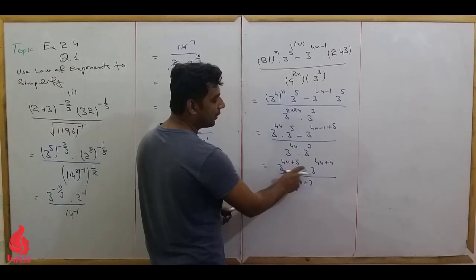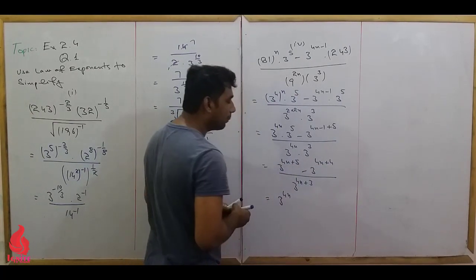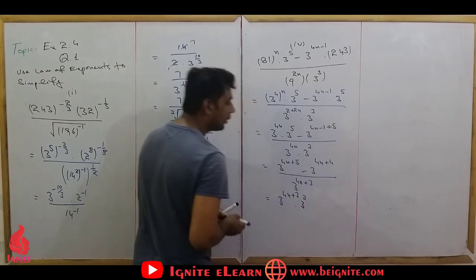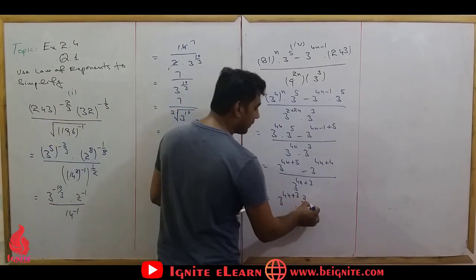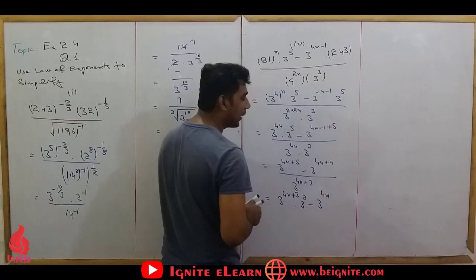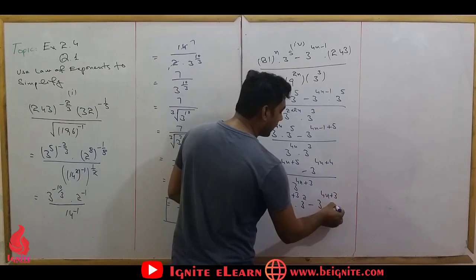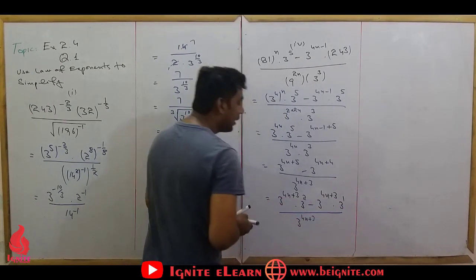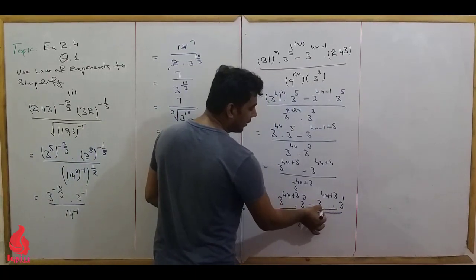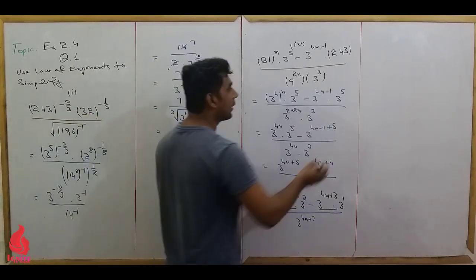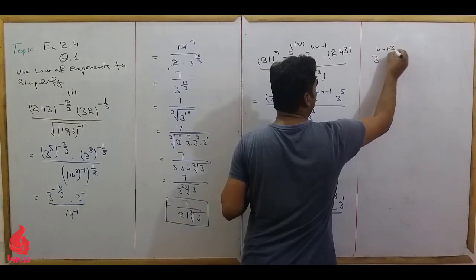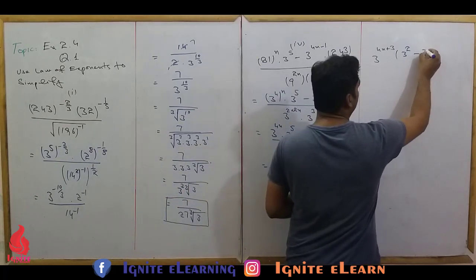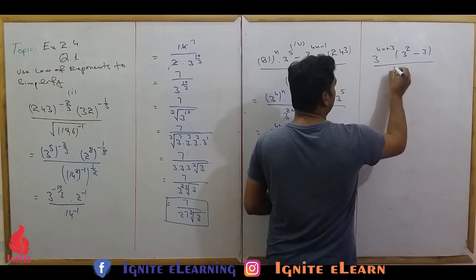We separate the terms: numerator becomes 3 raise to power 4n plus 5 plus 3 raise to power 4n plus 4 plus 3. We separate using the law so each term has 3 raise to power 4n plus 3 as a factor. Factoring out 3 raise to power 4n plus 3 from each term, we divide numerator and denominator by 3 raise to power 4n plus 3. This gives us 3 raise to power 2 minus 3 raise to power 1 in the numerator.